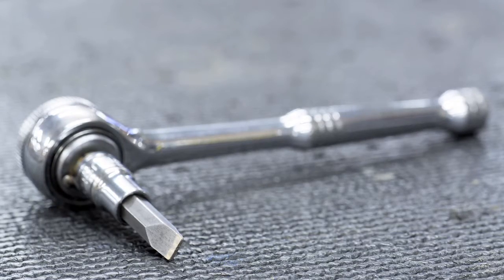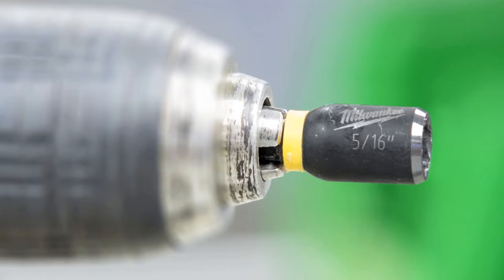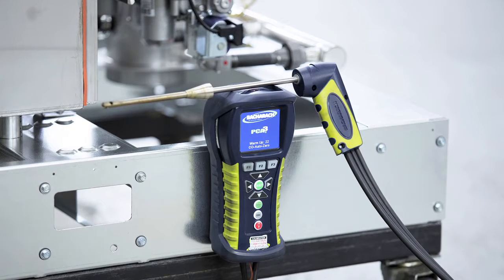You will need a quarter inch drive ratchet with a flat tip screwdriver bit for turning the throttle screw, a 5-16 inch nut driver for the enclosure panels, and a combustion analyzer.